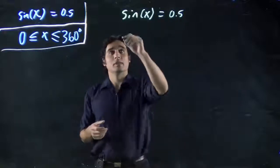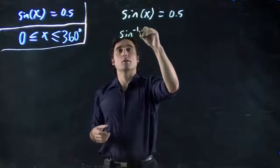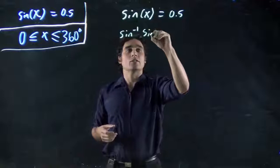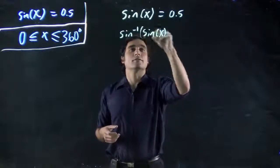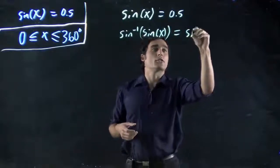We start the same way as before. Sine to the minus 1. We want to get x on its own, so we do the opposite of sine to cancel it. And, of course, do it to both sides.